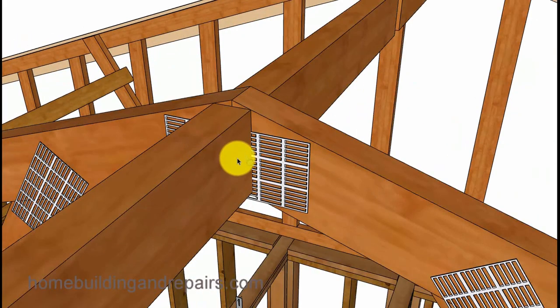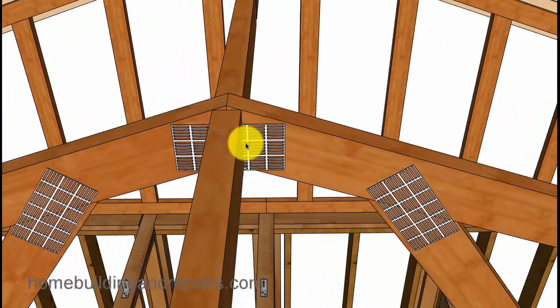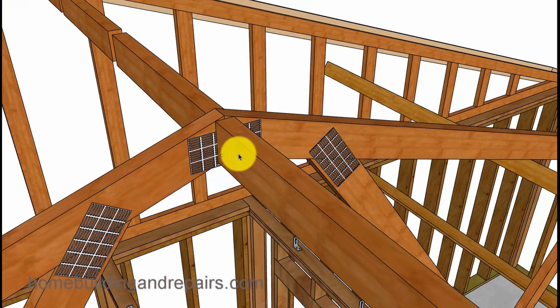Truss connection at the top—you're usually going to have blocks. You won't have a solid ridge. You'll have blocks in between. These can toenail or end nail, depending upon the assembly of the project.